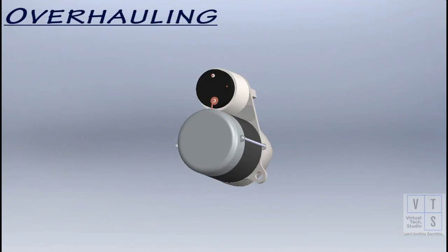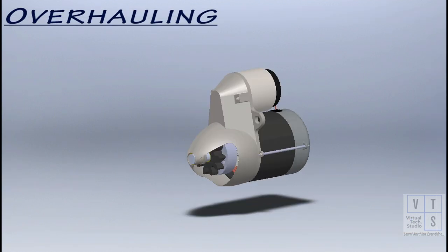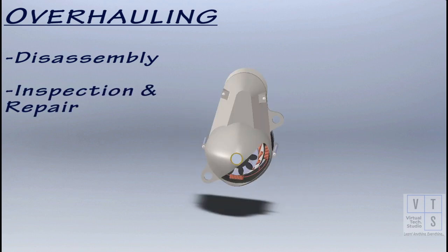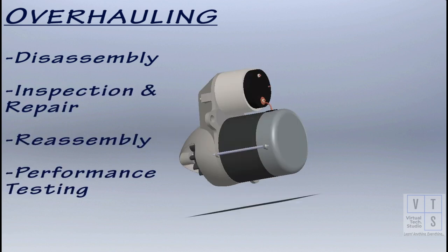In this animated presentation, we will look at how to overhaul a typical automobile starting motor. We will go through disassembly, inspection, repair and/or replace the parts, reassembly, and finally performance testing.